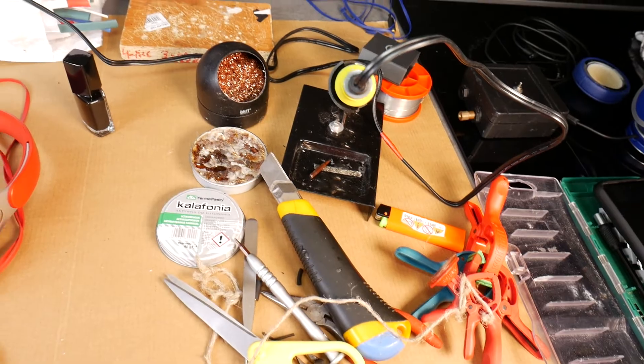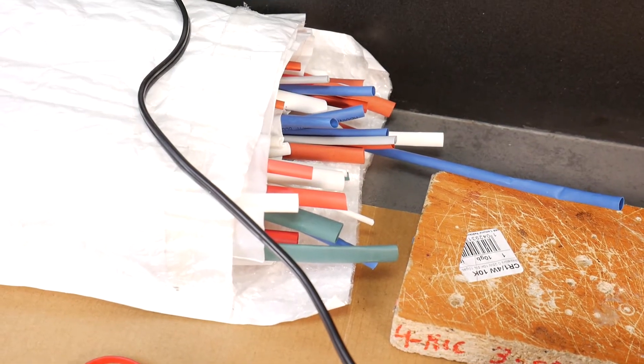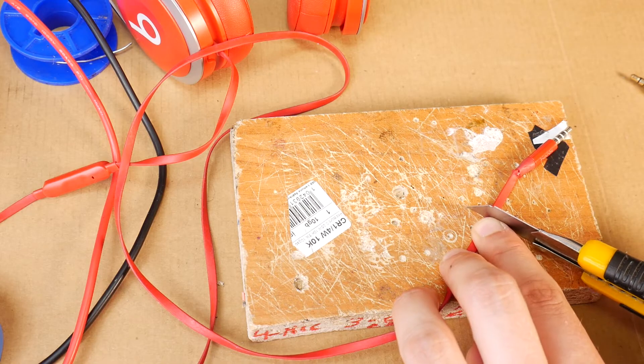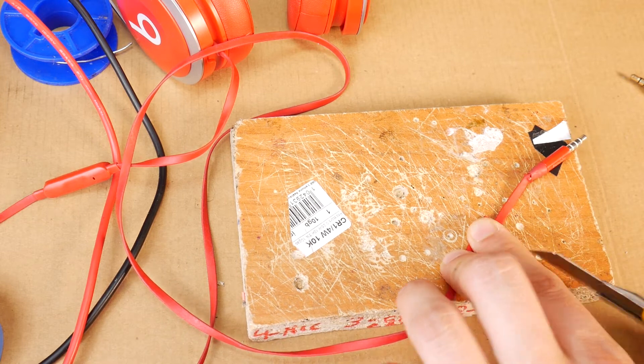You will also need some instruments, a soldering iron, and heat shrink tubing. Start by cutting off the damaged jack, cut it a few centimeters from the end of the jack.